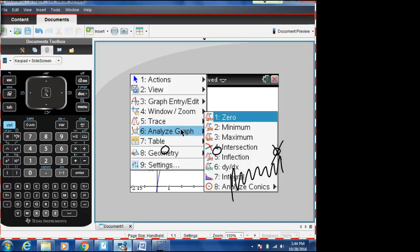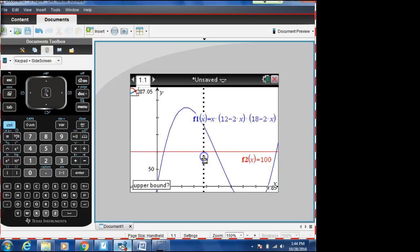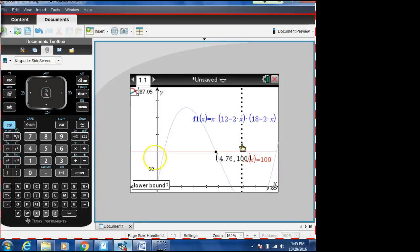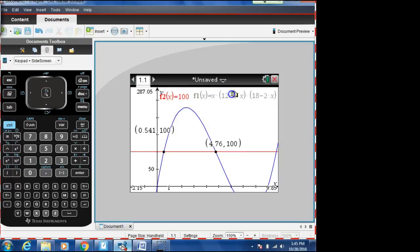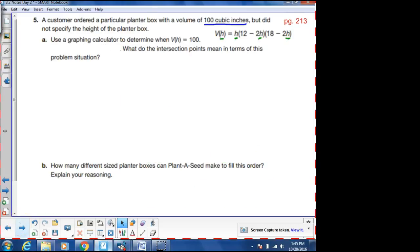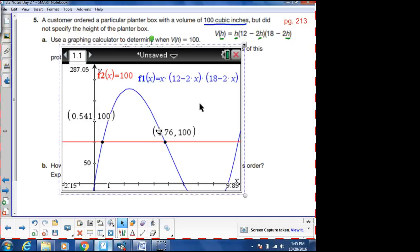So let's use the calculator, menu, analyze, intersection, and then we have to do this twice now. Menu, analyze, intersection. So there is the first one. There is my second one. Here are my two functions. And now what I'm going to do is I'm going to put this back into our notes. Technology. It's a wonderful thing.